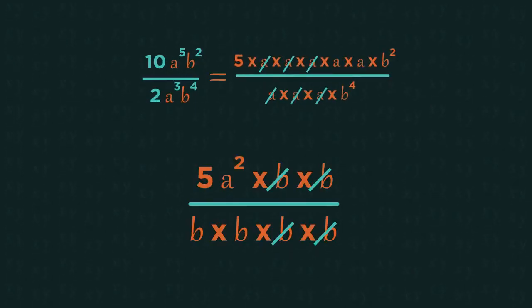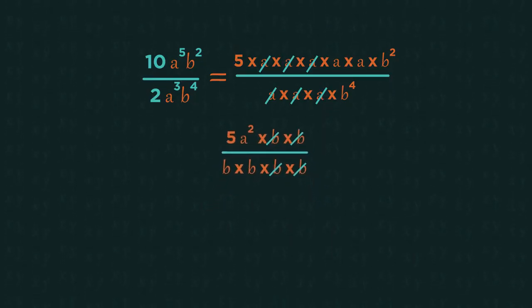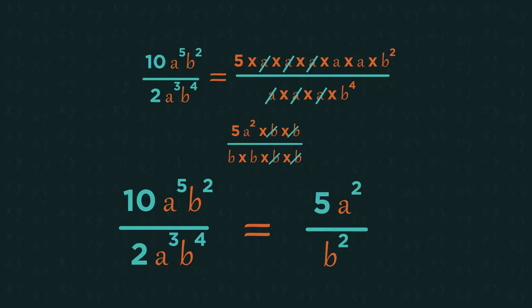And then, the same for the b's. We can cancel out 2 b's, leaving just 2 b's in the denominator, giving us our final answer.